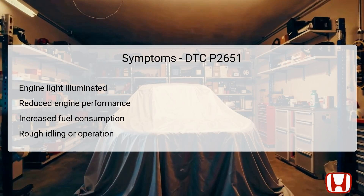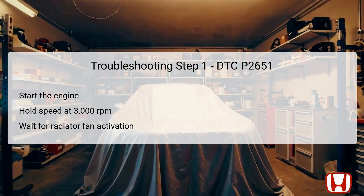The first step in troubleshooting the P2651 code involves starting the engine and maintaining an engine speed of 3000 RPM without any load. It is crucial to keep the vehicle in park or neutral mode during this process. This step is designed to warm up the engine and allow for the activation of the radiator fan, which can indicate the cooling system is functioning correctly. By reaching such a speed, you enable the engine to operate under normal conditions, thus allowing any potential issues with the oil pressure or rocker arm system to present themselves. Monitoring engine behavior during this phase sets a solid foundation for subsequent troubleshooting steps.